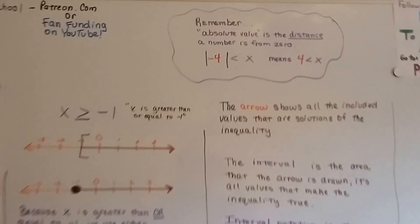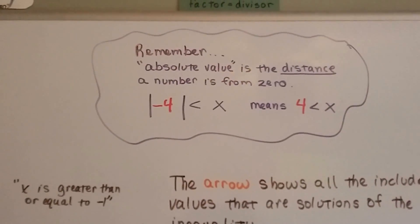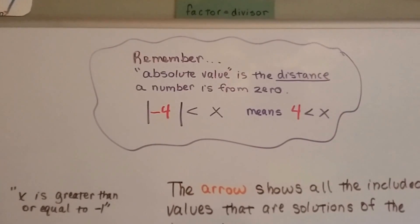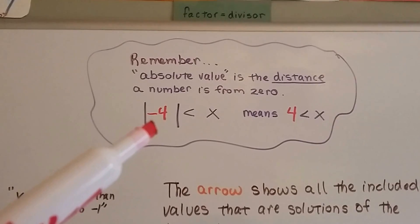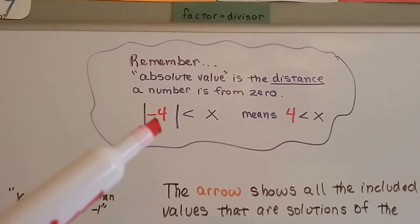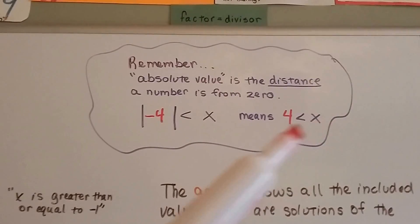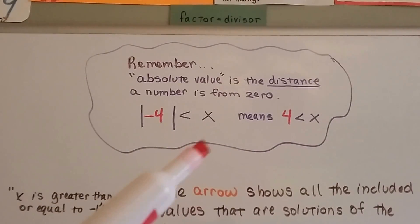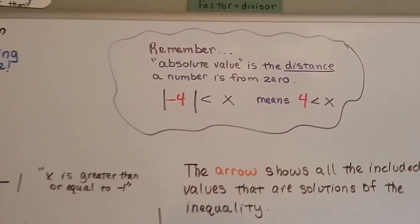I also want to remind you that if you're doing your homework — and I noticed some problems in the book had absolute values — remember that the absolute value is the distance a number is from zero. So if you see this as an inequality, it's read as the absolute value of negative 4 is less than x. That just means 4 is less than x, because the absolute value of negative 4 is 4 — it's 4 spaces from 0. So 4 is less than x.